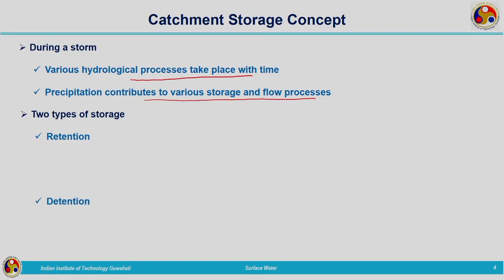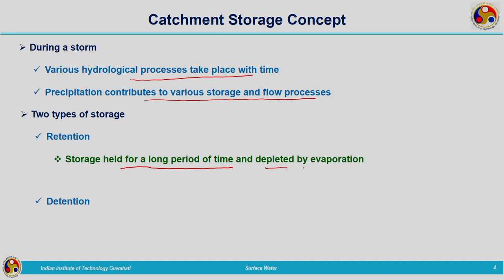Coming to storage, two different types of storages are commonly defined: one is retention and the second one is detention. Retention storage is the storage which is held for a long period of time and depleted by evaporation — water is retained on the surface or subsurface and stored for a long time, with depletion taking place mainly due to evaporation. The example related to retention storage is soil moisture storage. When infiltration is taking place, some amount of water will be stored within the soil pores, and after that interflow will take place depending upon the slope.